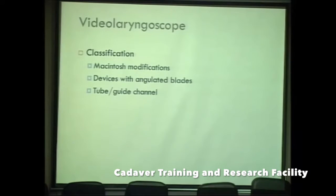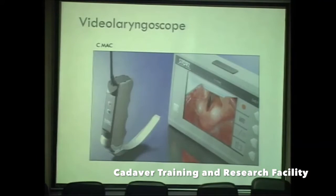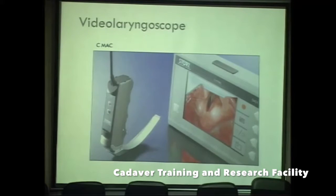The Glidescope is a pre-angled device. The standard CMAC has a video monitoring screen and a Macintosh blade available in sizes 2, 3, and 4, with a Miller size 0 and 1 also now available, as well as a D-blade. It has a 60-minute recording capability and an anti-fogging mechanism, and is easily learned by anaesthesiologists already familiar with the Macintosh blade.